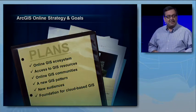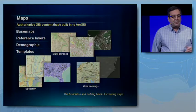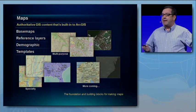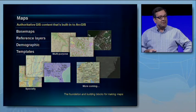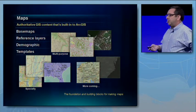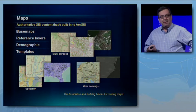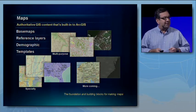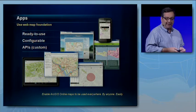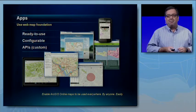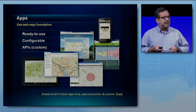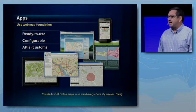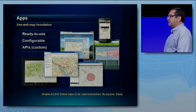This is ArcGIS Online. Today it contains many components. It has maps — base maps, reference layers, and other content that we use to make maps. We make maps to share geographic knowledge as well as share our tradecraft. It also has applications: hosted applications, the built-in map viewer, Explorer Online, configurable applications, and the APIs used to build custom applications.